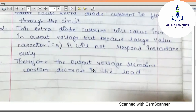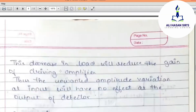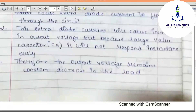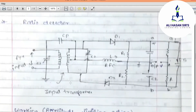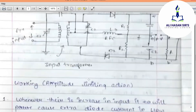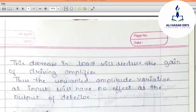The output voltage remains constant. This means the load resistance decreases, which reduces the gain of the driving amplifier. As load resistance decreases, the amplifier gain reduces automatically. This decrease in gain of the amplifier means that any increase in amplitude variation added to the input will have no effect on the output of the detector.